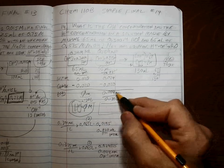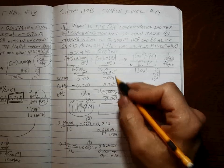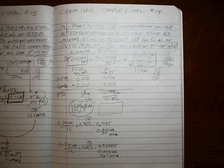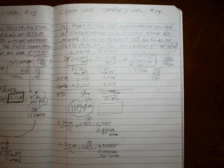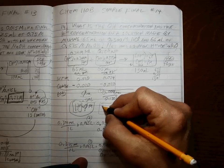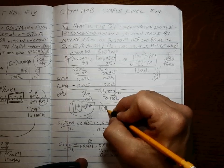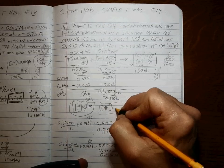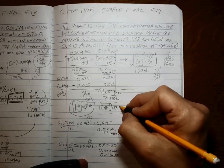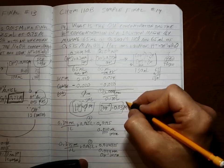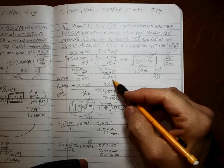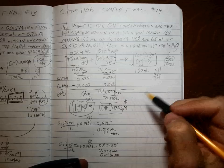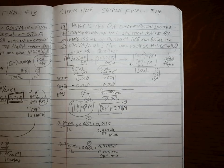And this one only has 1 sig fig because be careful with your addition and subtraction. So what is 0.004 divided by 0.13? It's the hydroxide ion concentration at the end, which is 0.03 molar, and that's only 1 sig fig because of the addition and subtraction.